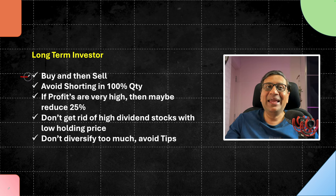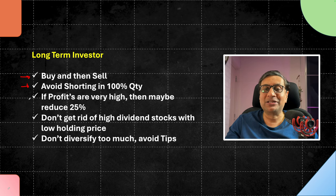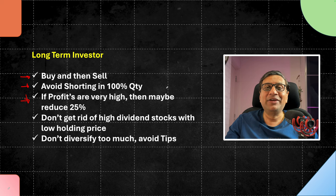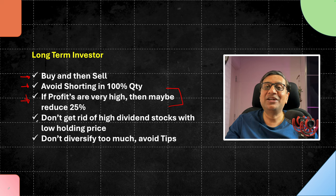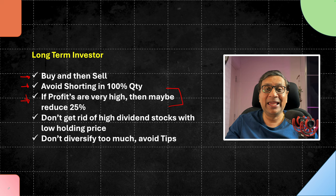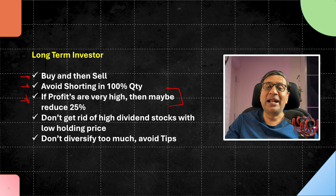Some specific tips for long-term investors: Buy and then sell — don't short the market, and don't short 100% of the quantity. If you are sitting on positions where profits are very high — maybe 100%, 200% — reduce those positions by about 25%, assuming you want to keep those stocks for the long run. This 25% reduction books profits, and if markets tank you can buy those 25% back at a lower cost. If you are holding a high dividend stock at a very low price — for example, if you bought REC or PFC at ₹120–130 levels — don't sell them at all for shorting. You won't get high dividend yield stocks again at those levels for maybe a decade. Preserve your high dividend stocks.